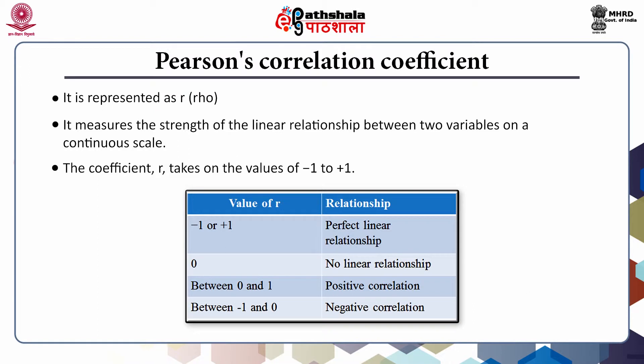When the value of r is between 0 and 1, as one variable increases the other also increases — this is a case of positive correlation. For example, positive correlation between height and weight. When the value of r lies between minus 1 and 0, as one variable increases the other decreases — that is a case of negative correlation. For example, negative correlation between age and hours of sleep per night.